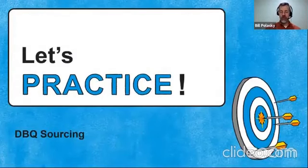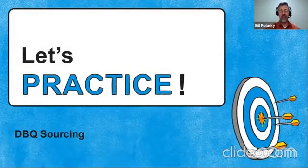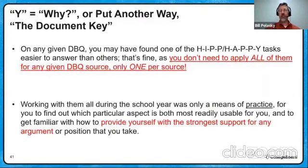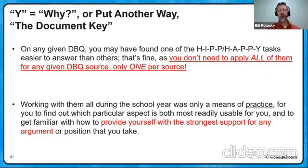Let's practice now using this whole model to try to use content and process together. We're going to look at sourcing, that why. Remember your HIPP or HAPPY work. We're not going to do all that tonight. We're going to get right, cut right to the chase, get right to the why, because HIPP and HAPPY were exercise tools you used in school. But the whole goal was to get you to the point where in your head you could determine what's the best and strongest way from among those four variables that I could use a document to help support an argument of mine.